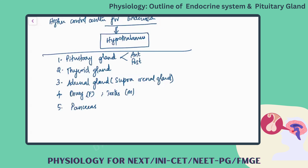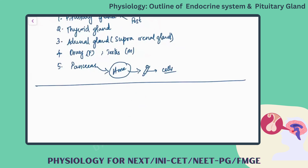Pancreas is considered to be both an exocrine and endocrine gland. In the endocrine system, the pancreas is a gland that synthesizes hormones entering the blood circulation to reach specific target tissues. In the exocrine system, you consider only the pancreatic juice. That is why pancreas is considered to be both exocrine and endocrine in its function.